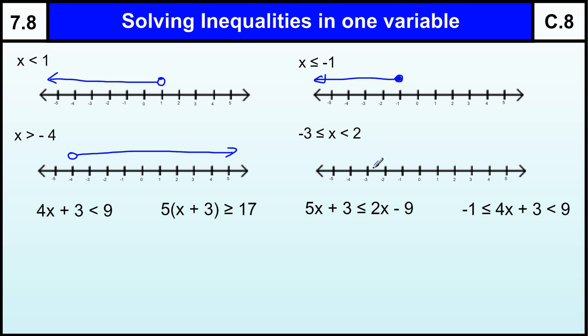And if we've got one between two numbers, we'll just circle both numbers, minus 3 and 2, draw a line between them. Which ones does it include? Well, it includes the minus 3, because minus 3 is less than or equal to x, so we shade that in, but it's less than 2, so it's not included in 2.